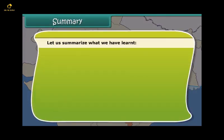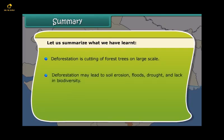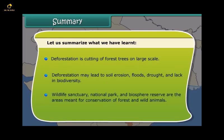Let us summarize what we have learnt. Deforestation is the cutting of forest trees on a large scale. Deforestation may lead to soil erosion, floods, drought, and loss of biodiversity. Wildlife Sanctuary, National Park, and Biosphere Reserve are the areas meant for conservation of forests and wild animals.